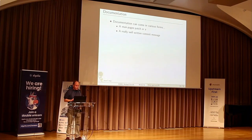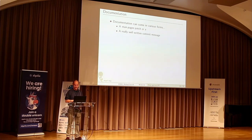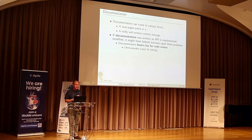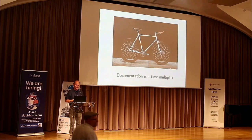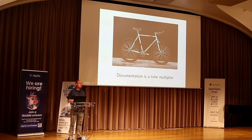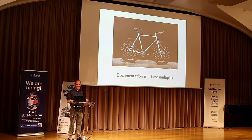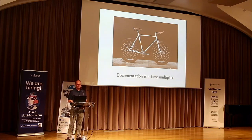That documentation could come in various forms — it could be a man pages patch, or a really well-written kernel commit message. If you do that documentation at the time the API is implemented, it helps your reviewers, lowers the bar for code review, and gives you a specification for testing. Someone said it to me the other day: documentation is a time multiplier. It's like a bicycle — gets you places faster. Documentation is a time multiplier. It makes everyone else's life faster.